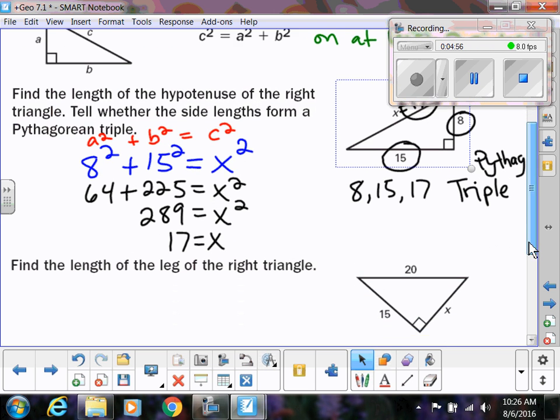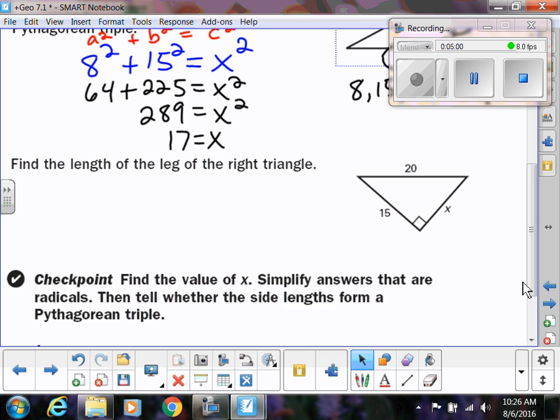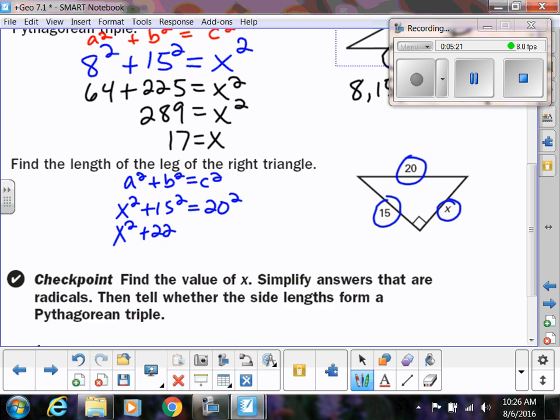So you can also use this to not just find the hypotenuse, but you can use it to find a leg. So in this right triangle, we're missing a leg, but notice we have two other pieces of information. Just be careful when you set this up. When we're doing a squared plus b squared equals c squared, the c is the 20. So make sure you're putting that in the correct spot. Otherwise, I have x squared plus 15 squared. So 15 squared is 225. 20 squared is 400. Subtract the 225. 175. And then take the square roots. So now if I try to take the square root of 175, I get approximately 13.23, which is not a whole number. So this is not a Pythagorean triple.